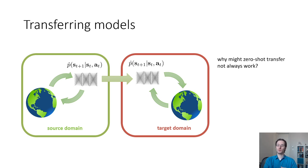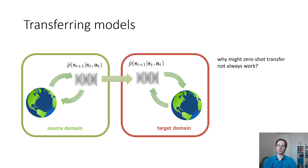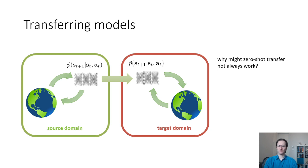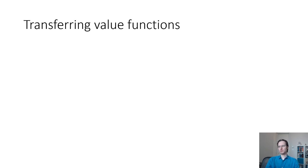That said, if you have a very broad range of different rewards in the source domain and the target reward comes from the same distribution, then you could count on zero-shot transfer. If you have a broad enough range of tasks in the source domain that covers the tasks you might see in the target domain, you could hope for zero-shot transfer. Without such an assumption, distributional shift could make you arbitrarily bad. In practice, with careful source domain task design, zero-shot transfer can often work. Okay, so that's all there is to say about transferring models. Next, let's talk about transferring value functions, which is a lot less straightforward but can still work really well.